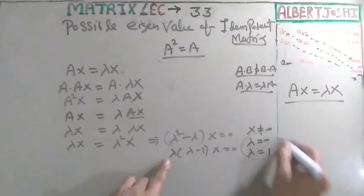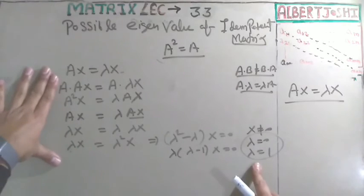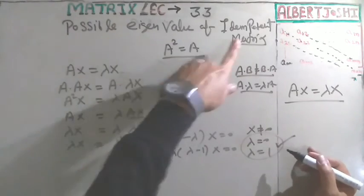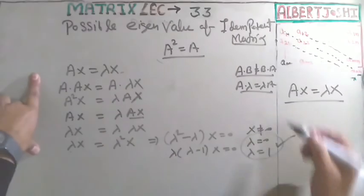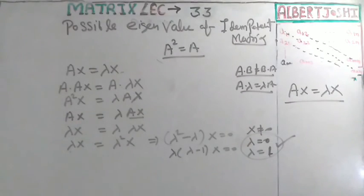So there are a total number of four options, so you will click that the possible eigenvalues of idempotent matrix may be 0 or 1. This is the correct answer. Thank you so much.